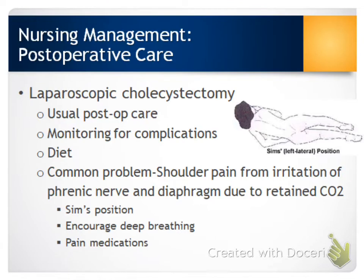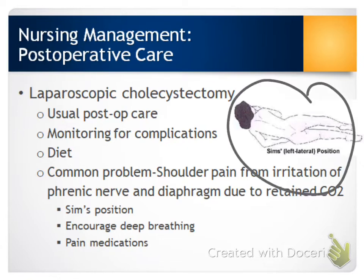One complication very specific to laparoscopic surgeries — not just cholecystectomy, but any laparoscopic procedure — is shoulder pain. This happens from the CO2 that is pumped into the abdomen during the procedure. That CO2 irritates both the phrenic nerve and the diaphragm, causing pain. To help relieve it, we can put patients in a SIMS position — left lateral side — and encourage coughing and deep breathing to help get rid of some of that CO2, along with pain medications.